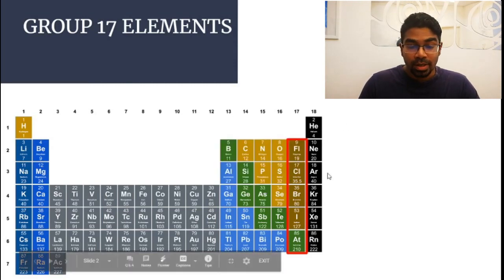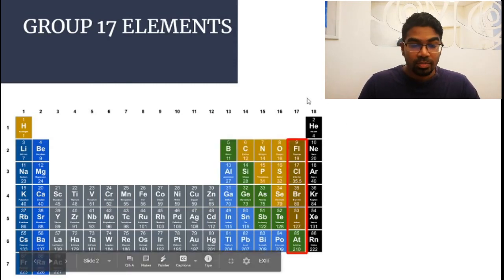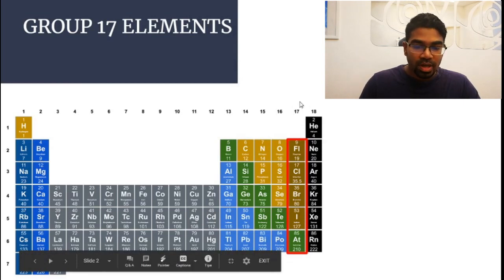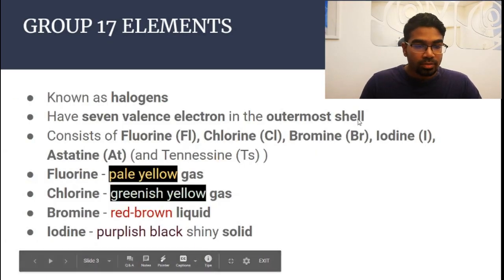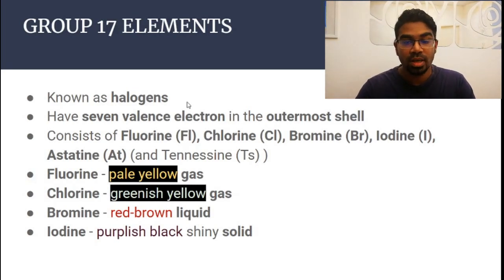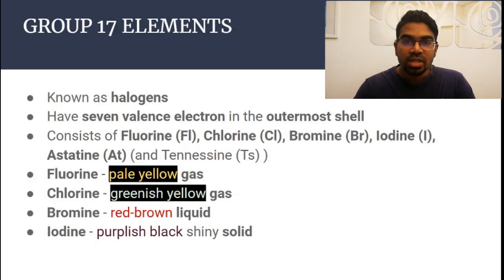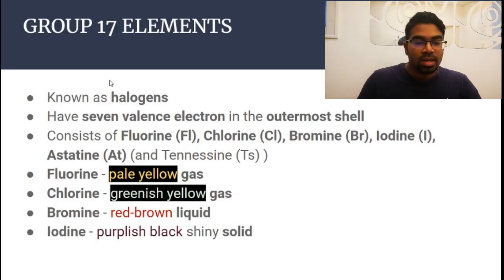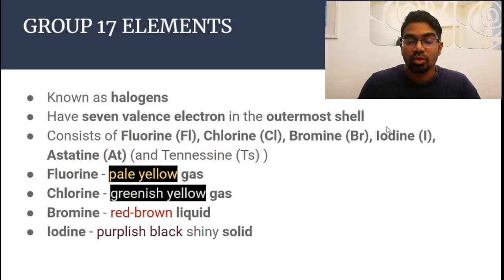Group 17 elements are located towards the end of the right-hand side of the periodic table. Remember, groups are the vertical columns, so group 17 is almost at the end. They are known as halogens — group 1 is the alkali metals, group 18 is the noble gases, and group 17 are the halogens. Since they are in group 17, they have seven valence electrons in the outermost shell.